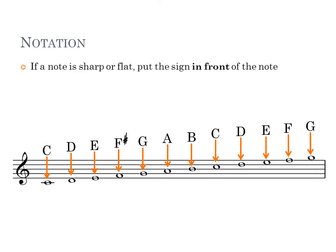We looked at sharp notes and flat ones before, and when we write them it's pretty simple — we just put that symbol right in front of the note on the staff. For example, if we want to make an F sharp, we put that symbol right in front of the note. It's important to put it in front and in the same position as the note — on or in between the lines in the same place, not higher up on the staff. The same thing goes for a flat note: we use the flat symbol and put it right in front of the note we want to make flat.